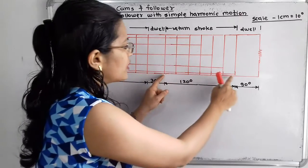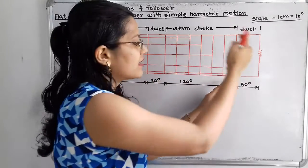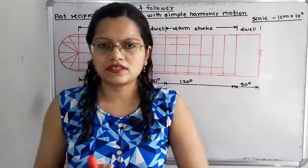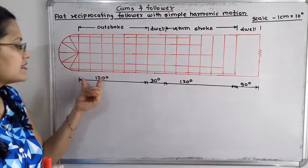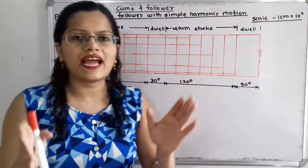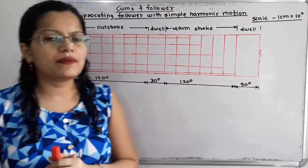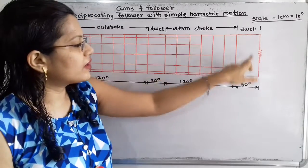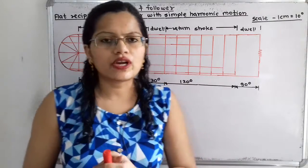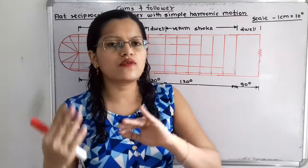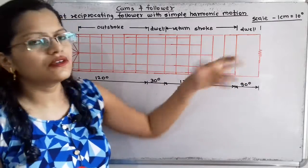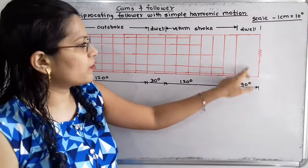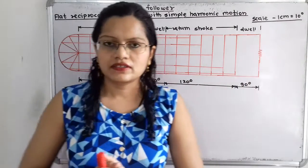The return stroke is for 120 degree, that is 12 cm. And again the remaining 90 degree is the dwell period, so here is the 9 cm distance. So this abscissa is getting completed. Now on the ordinate we have to take the distance for the 20 mm stroke. You can take any scale, for example 1 is to 4, giving 8 cm, or 1 is to 2 giving 4 cm vertical distance.